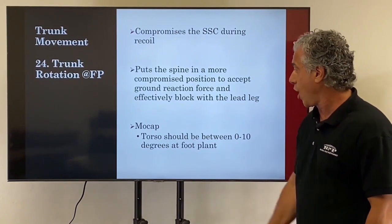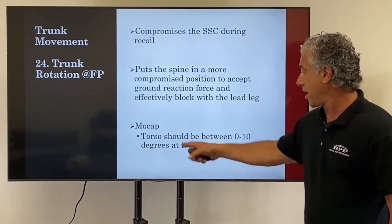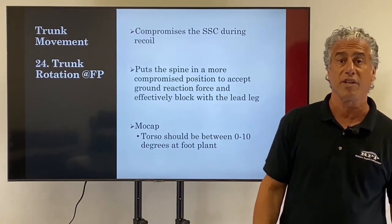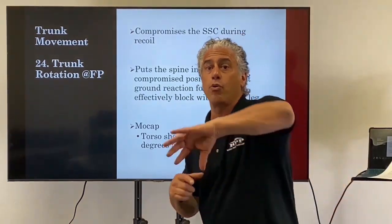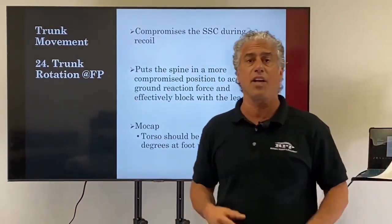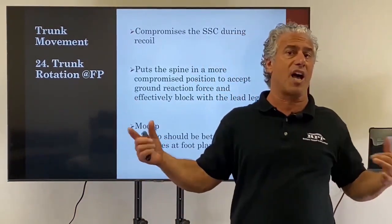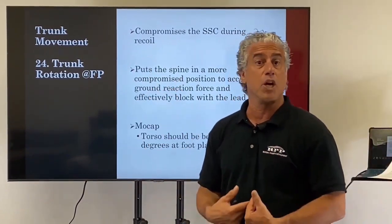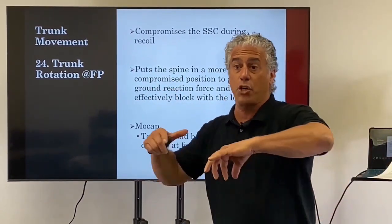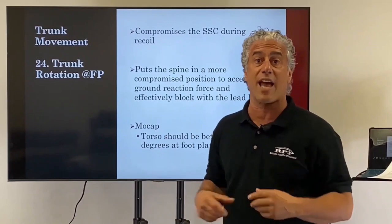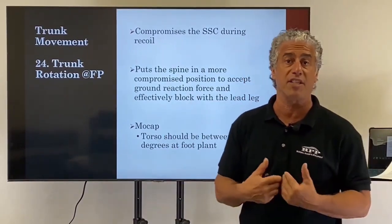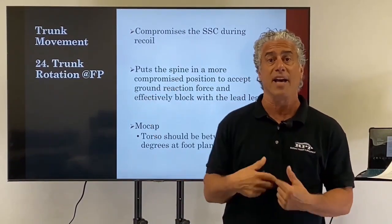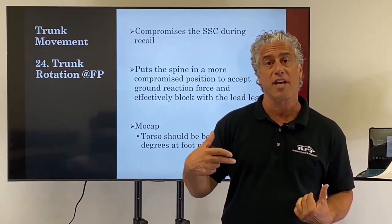On mocap the torso should be between zero and ten degrees at footplant. A lot of kids will pull this open by flying open with the glove side, which brings the upper side around. It could be core strength, it could be a poor scap load — it could be one of a number of things — but we analyze the issue and then we go back and see what shakes free.